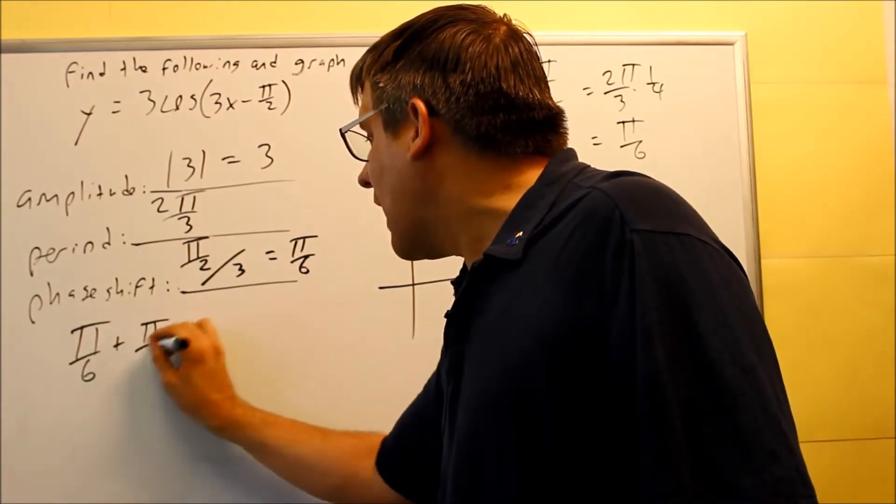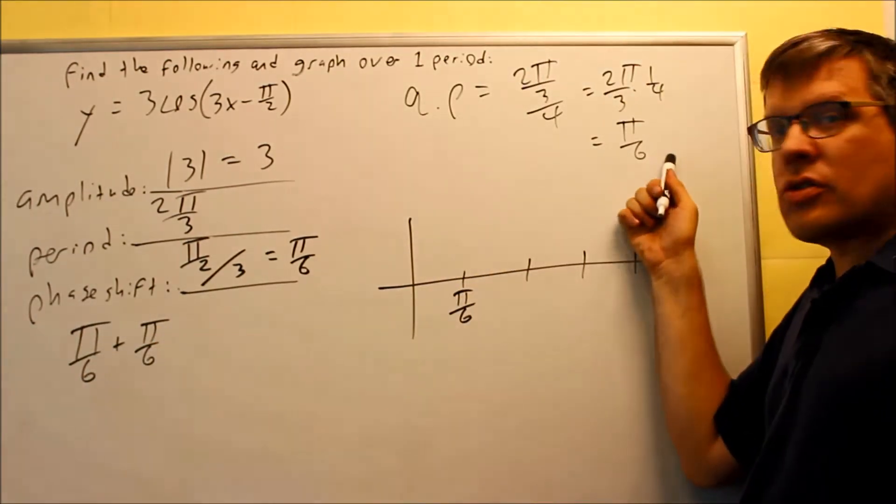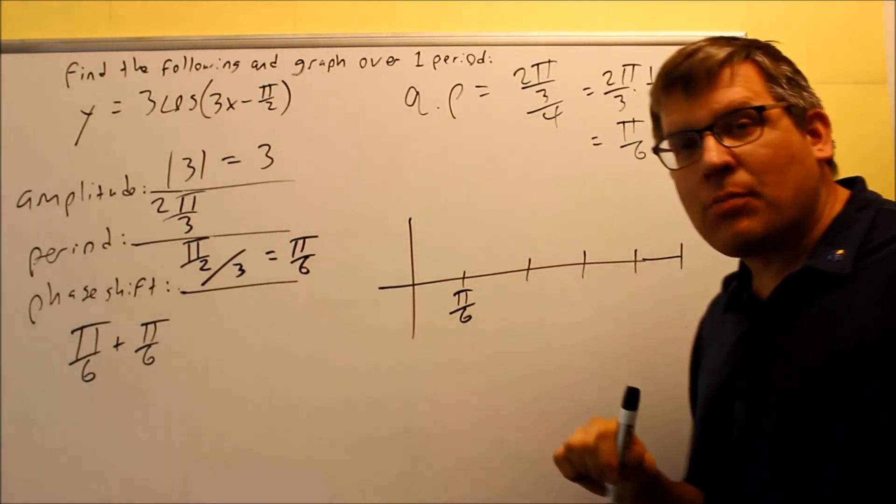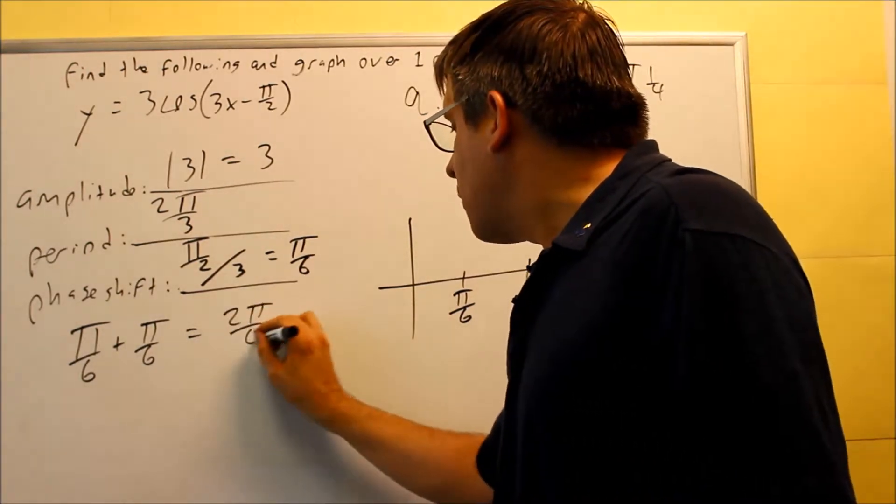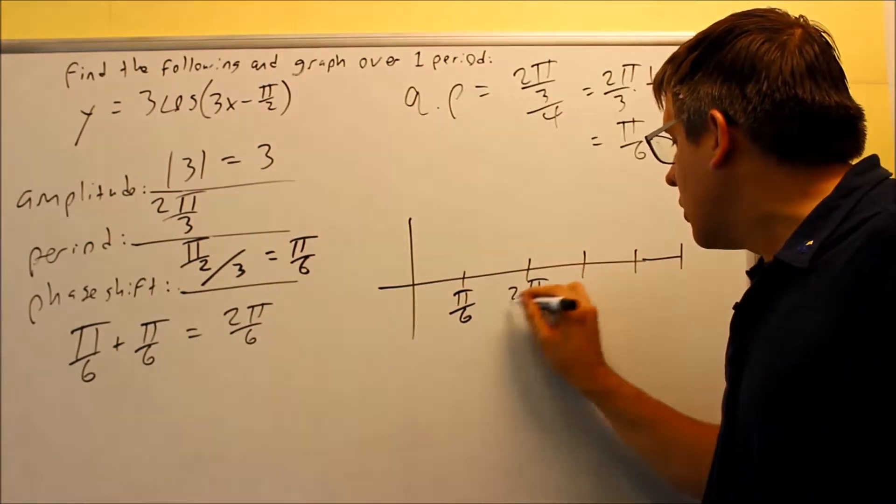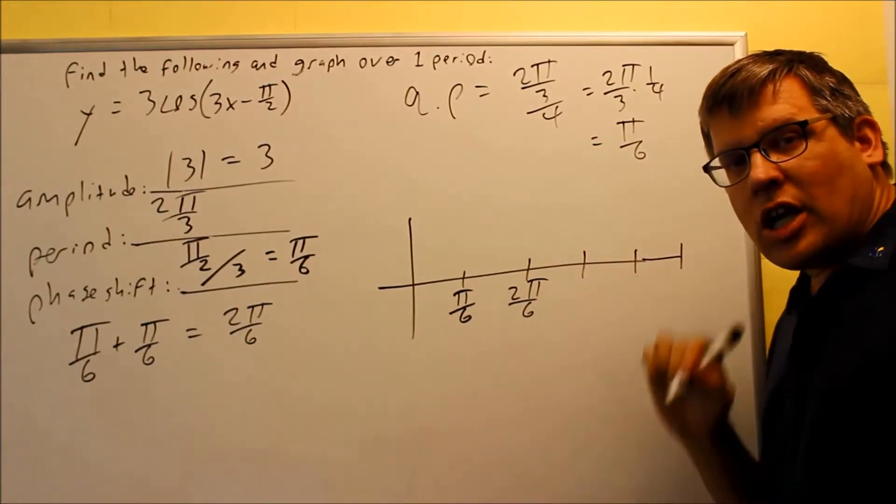and I want to add my quarter point to it. So if I take π over 6 and add π over 6 to it, that gives me 2π over 6. That's this one right here. I want to keep doing that. I want to add another π over 6 to get the next point over here.